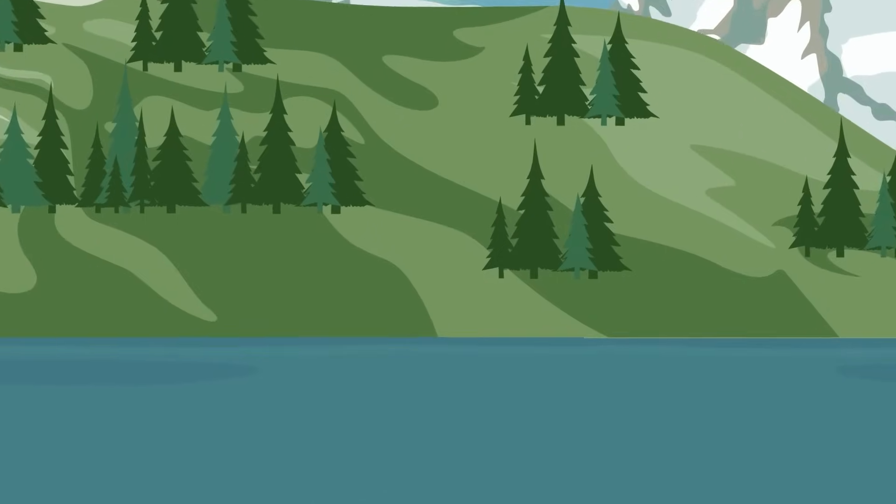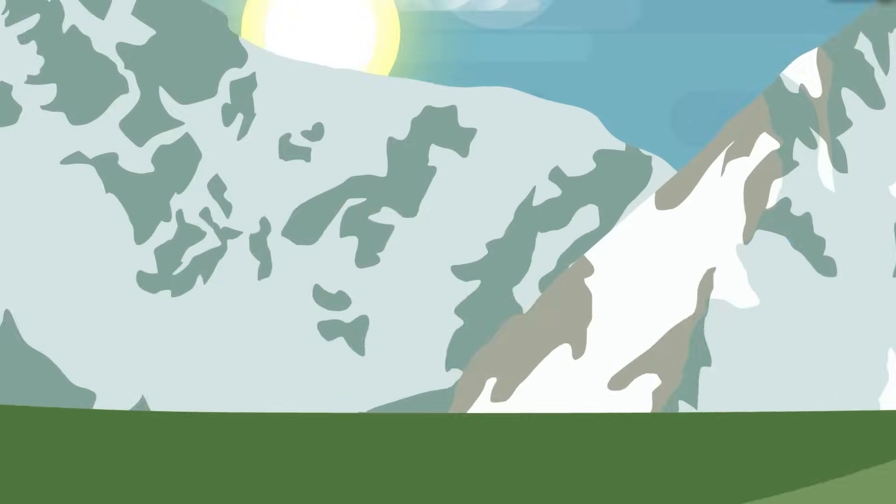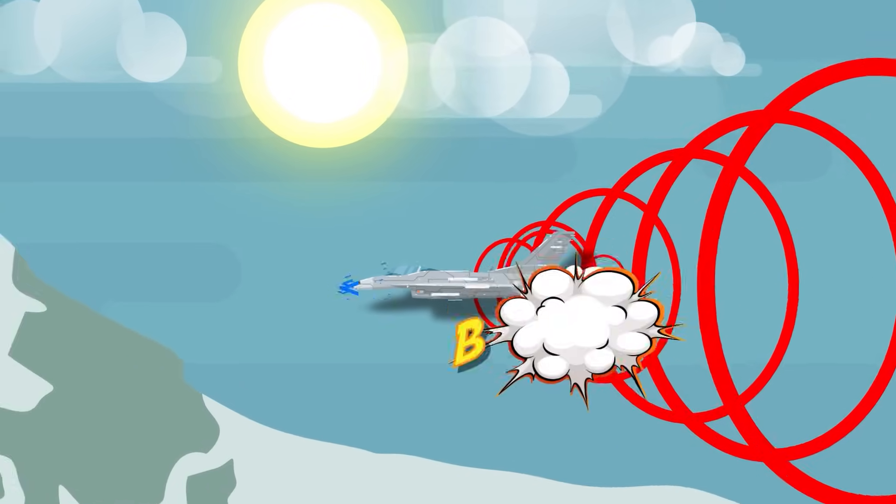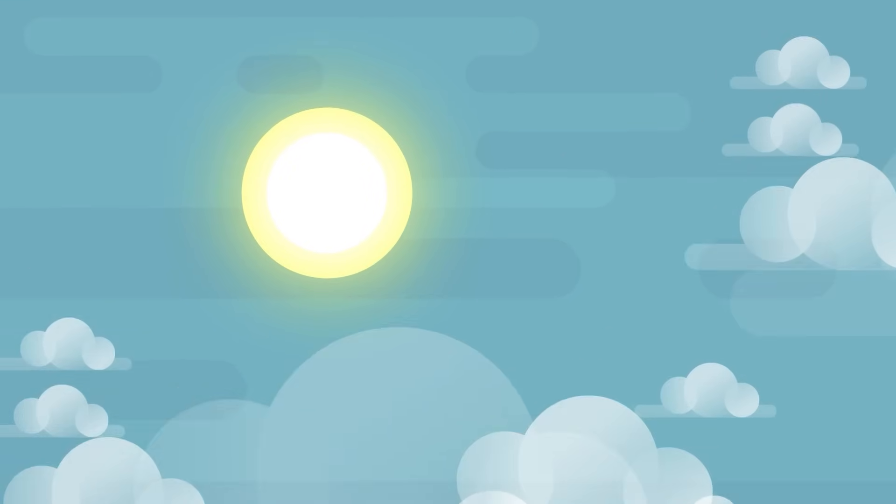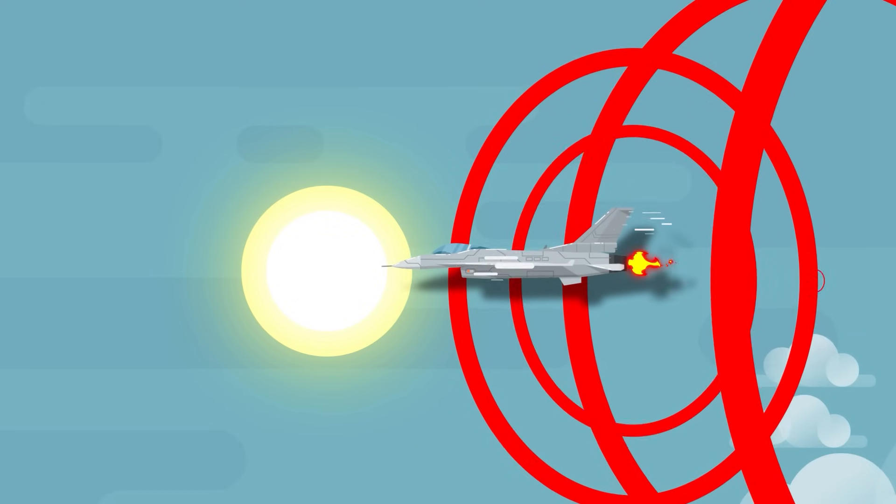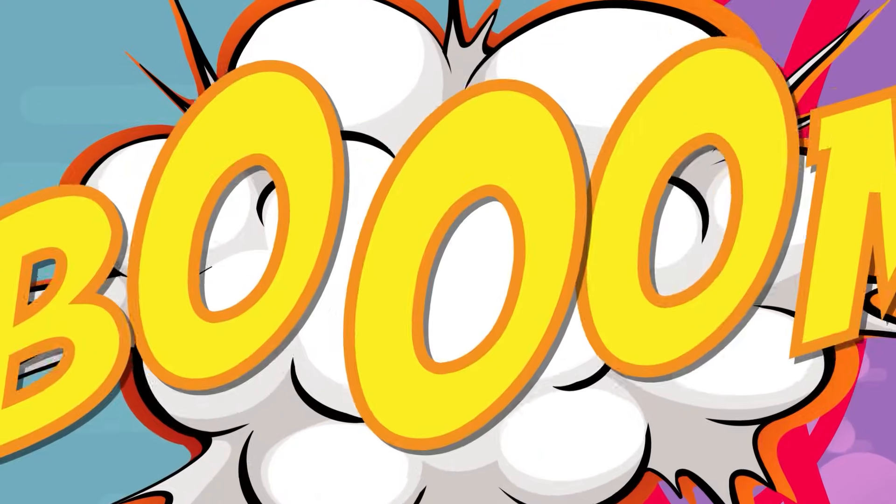Altitude also plays an important factor in how intense a sonic boom is. The higher a supersonic aircraft is flying, the wider the area of the Mach cone will be. This is because the shockwave needs to travel a further distance to reach the surface of the earth than a low-flying object.